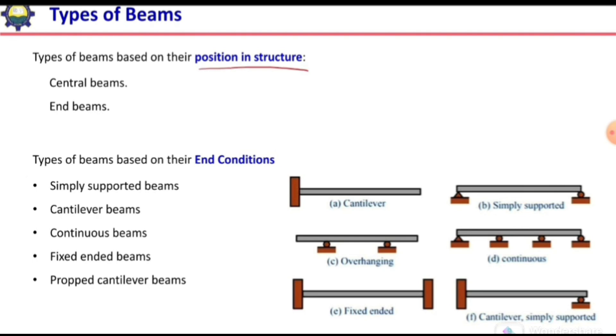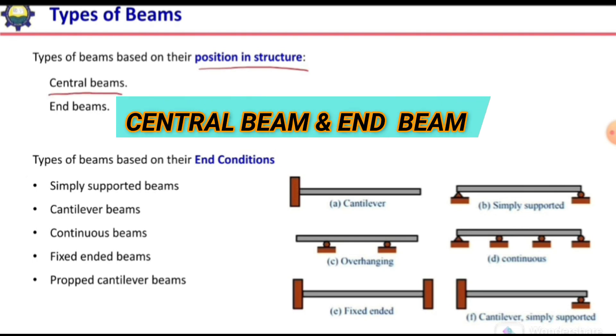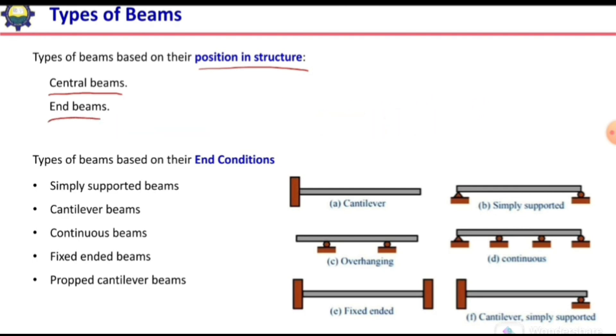Types of beams based on their position. Based on the position we can differentiate them as a central beam or interior beam and end beams or edge beams. Because in case of structure, the loading on the interior beam and edge beam are different.